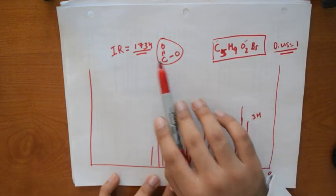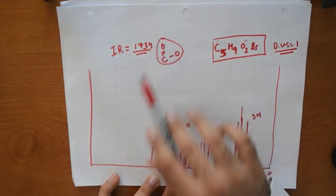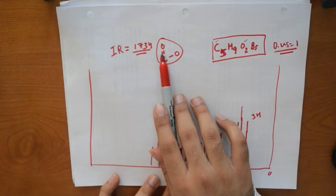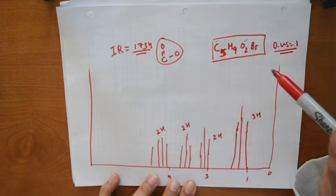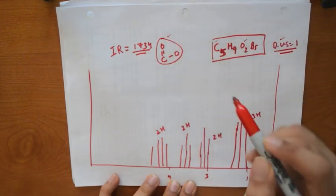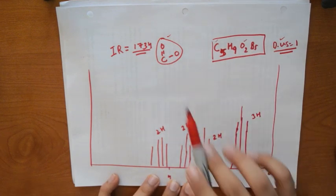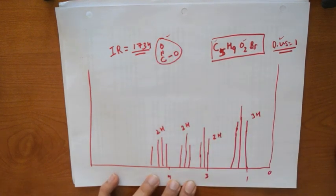Since there's an ester, which is right here, that's your degree of saturation right there. It could have been a ring because a ring is also a degree of saturation, but in this case they tell you it's an ester. So that checks out - that's one check mark we can do. And we've taken care of one carbon and two oxygens which is really nice by looking at this ester.